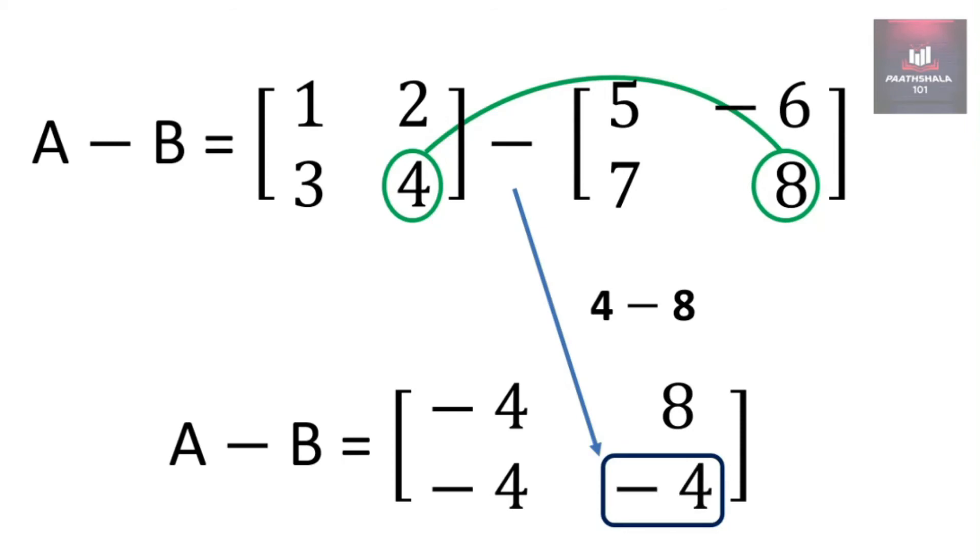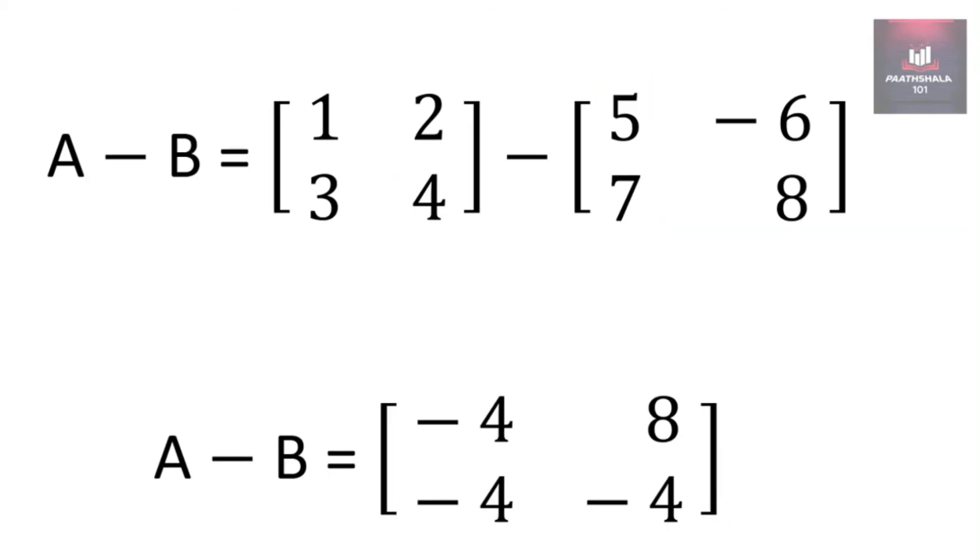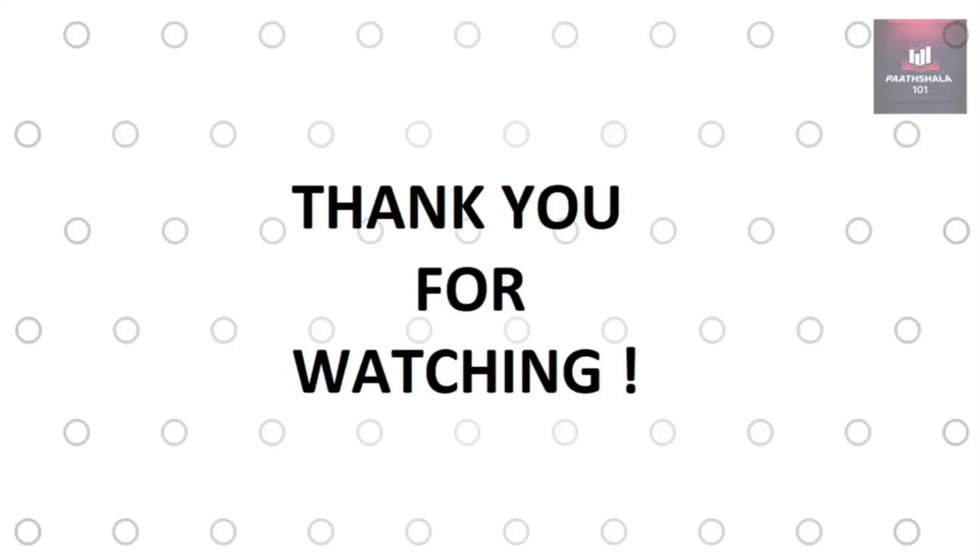So let's look at the summary of the entire sum. A minus B on calculating gives a 2 by 2 matrix with the elements minus 4, 8, minus 4, and minus 4. Hope you understood the concept. Thank you for watching this video.